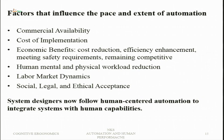Both human mental and physical workload can be reduced through automation. Labour market dynamics also matter — workers may themselves demand automation as support for their work. Social, legal, and ethical acceptance is important as well; not any automation is introduced without question — if it has ethical issues or concerns, there is a question mark. System designers now follow human-centered automation to integrate systems with human capabilities, which improves user acceptability.